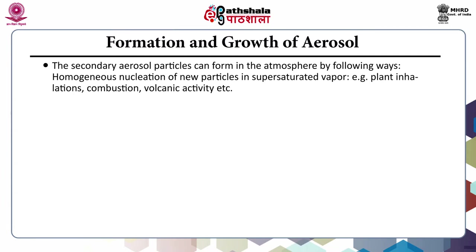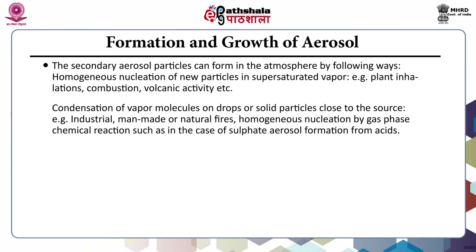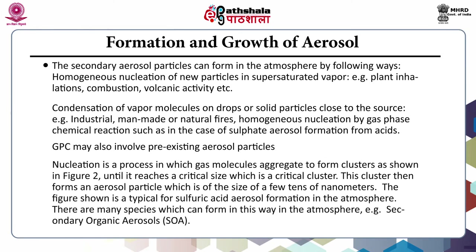Secondary aerosol particles can form in the atmosphere by: homogeneous nucleation of new particles in supersaturated vapor (e.g., plant emissions, combustion, volcanic activity); condensation of vapor molecules on drops or solid particles close to a source (e.g., industrial or natural foils); homogeneous nucleation by gas-phase chemical reactions such as sulfate aerosol formation from acids; and GPC involving pre-existing aerosol particles. Nucleation is the process where gas molecules aggregate to form clusters until a critical cluster size is reached, which then forms an aerosol particle of a few tens of nanometers. This is typical for sulfuric acid aerosol formation in the atmosphere.